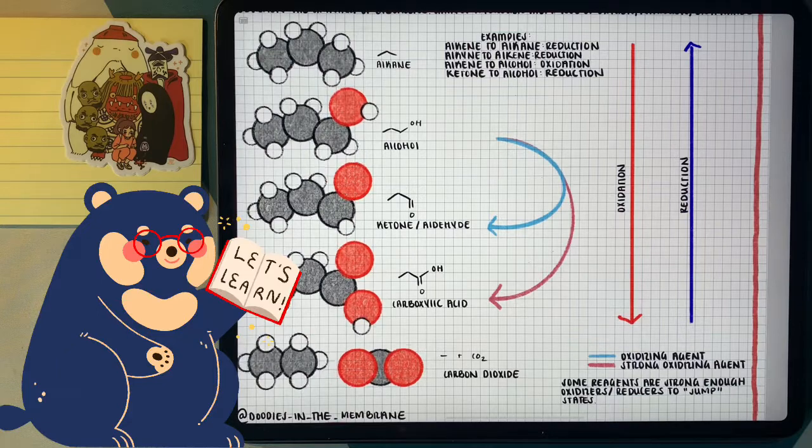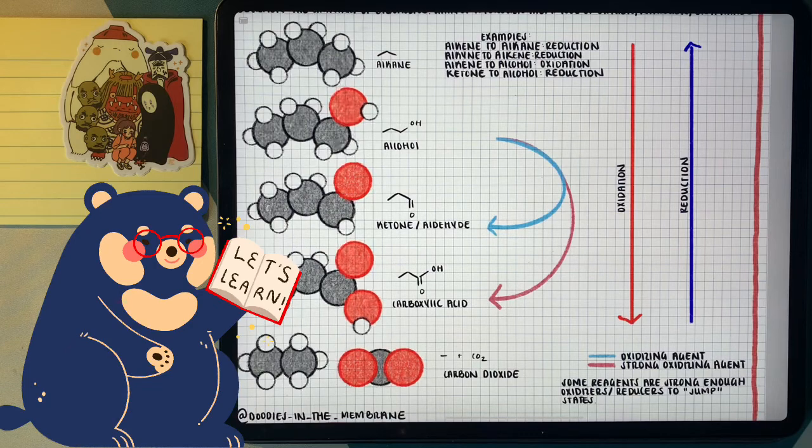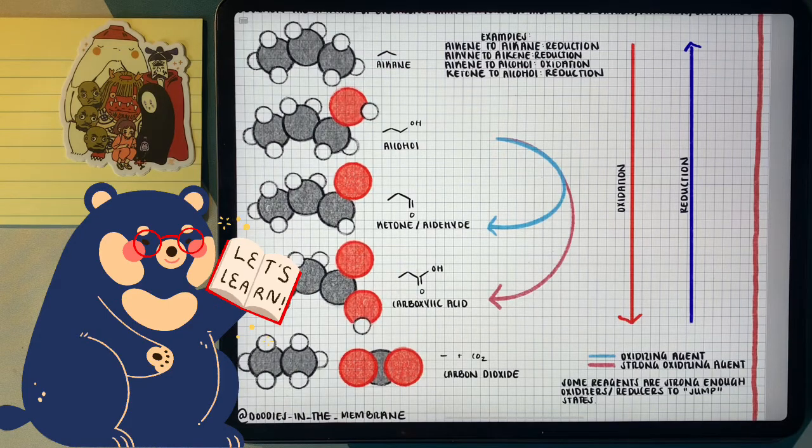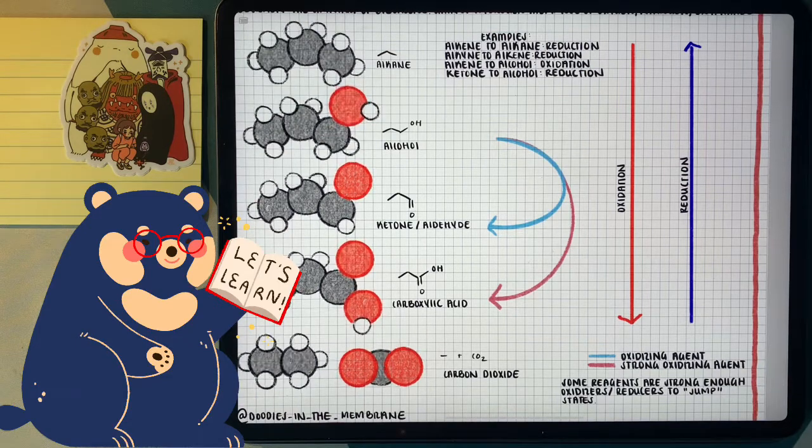And going from a ketone or an aldehyde to a carboxylic acid, having that OH group attached to the carbonyl carbon, that's also an oxidation. And finally, we can have the max oxidation with forming carbon dioxide, carbon being double bonded twice to two different oxygens.